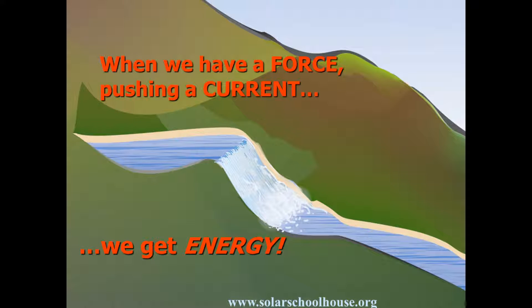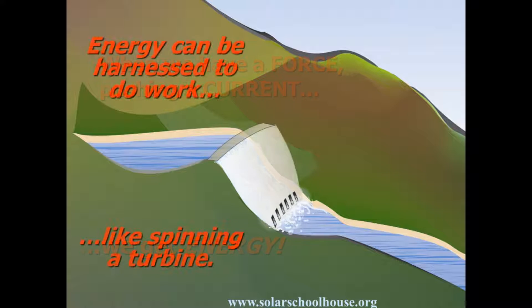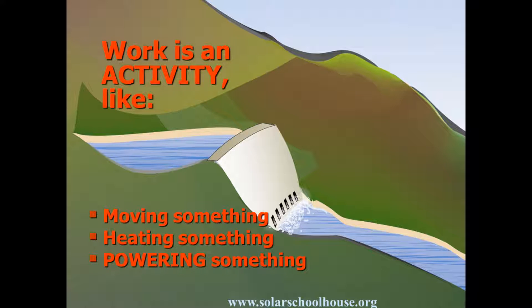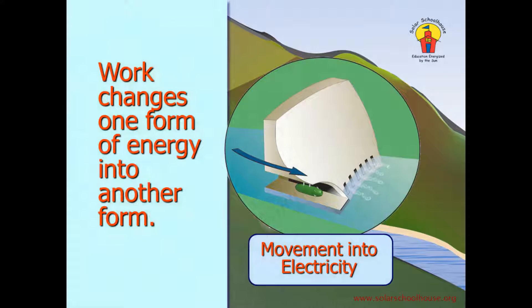We have a force measured in volts pushing a current of electrons measured in amps, and this gives us energy. Energy can be harnessed to do work, like spinning a turbine in a hydroelectric dam. Work is an activity like moving something, heating something, or powering something. Work changes one form of energy into another form of energy.